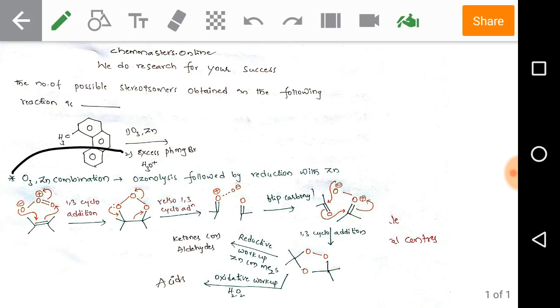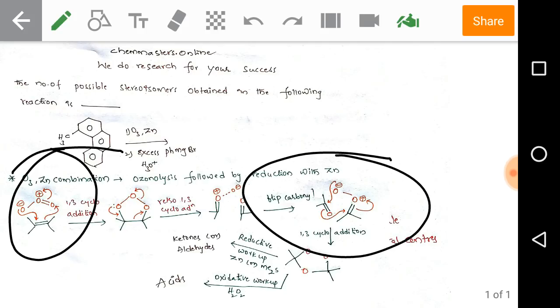Just look at the first step. In the first step, 1,3-cycloaddition takes place, that means ozone can add to the alkene. After that, in the second step, retro-1,3-cycloaddition takes place. Just follow the arrows.